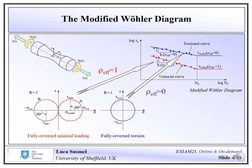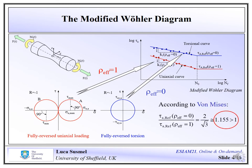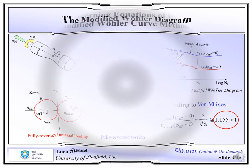In terms of stress analysis, this representation is clearly consistent because all the experimental data and results are post-processed according to the critical plane approach, where the critical plane is the plane experiencing the maximum shear stress amplitude. As you can see, the blue curve — the torsional curve — is plotted above the red curve. This is because, if we consider Formeyes' criterion and calculate the relative position of the two knee points, the blue curve must be above the red curve, and this trend is fully confirmed by the experimental evidence.